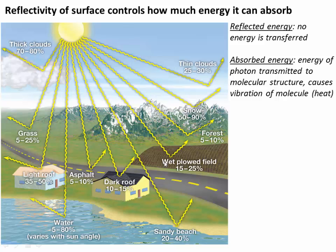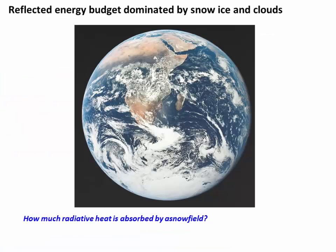Different materials are better or worse at reflecting. Water and snow are often pretty good at reflecting. Brown or black things like dirt or dark roofs generally absorb more. Clouds are really important — they're white and reflect a lot. Snow is also really important because it's white and reflects a lot.